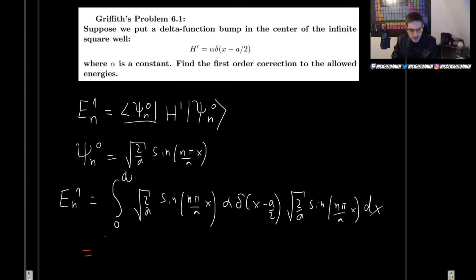Now we can simplify this a little bit. So this is going to be integral from 0 to a. Then we have this 2 over a, which we could, in principle, just write outside of the integral, since it's just a constant. And then we have sine squared of n pi over a x. And we have an alpha, which we could also write outside. But I'm kind of running low on space, so I'll just put it in front. And this is delta x minus a over 2 dx.